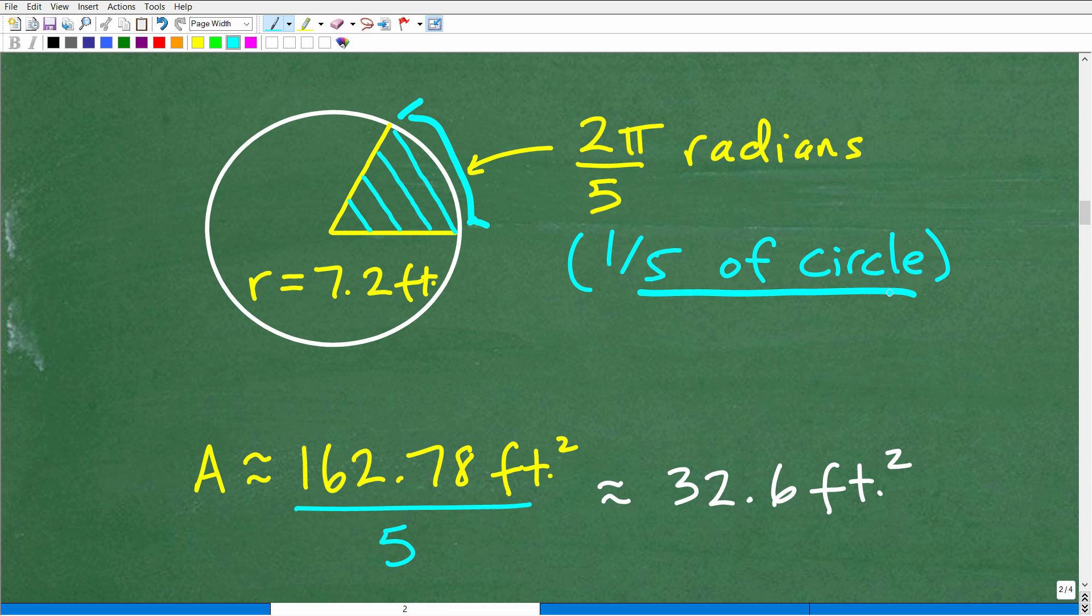So all we need is 1 fifth of the area to define the area of that sector. So we've already found the area. We'll divide that by 5, i.e., multiply it by 1 fifth. And we get approximately 32.6 feet squared.